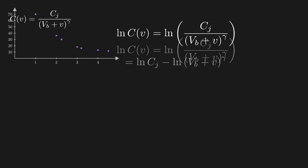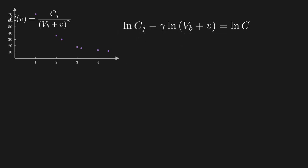Now we'll rewrite this as a difference of two logarithms. And finally, we can bring down the power of gamma. So now we've successfully separated our parameters from the independent variable v.